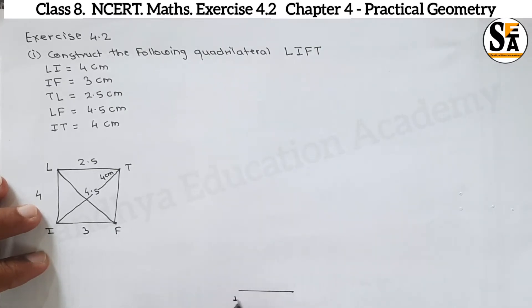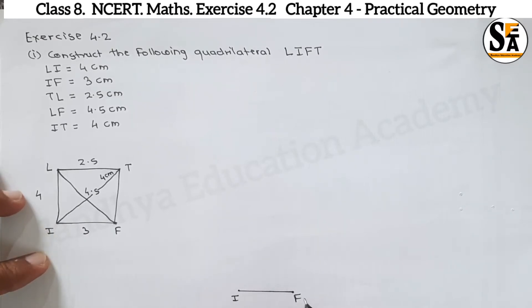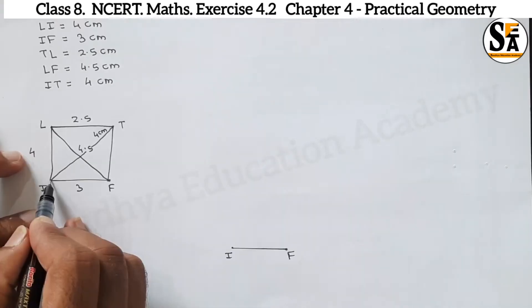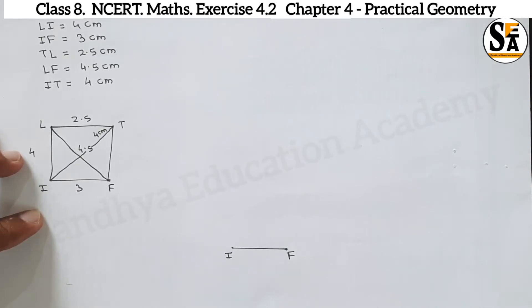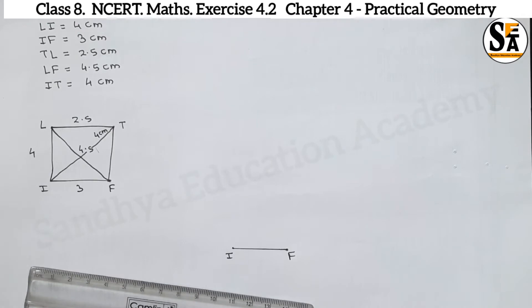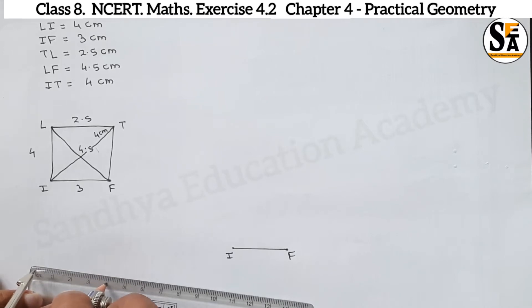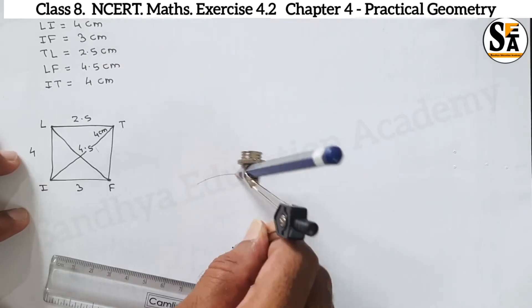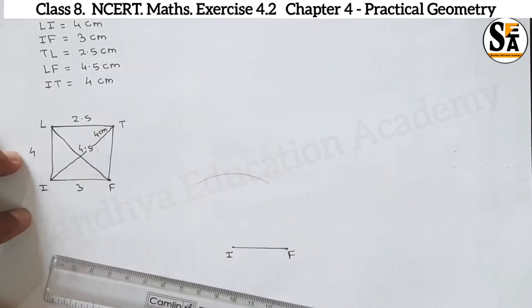Put the 3 cm dimension for IF. We get point I and point F. To get the next point L, it is 4.5 cm away from F and 4 cm away from I. So we will make arcs of 4 cm and 4.5 cm to get point L. First make an arc of 4 cm from point I.